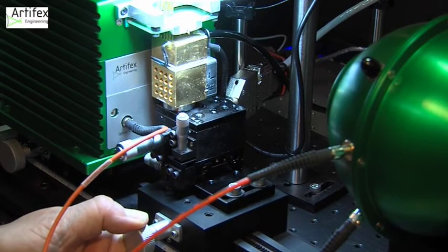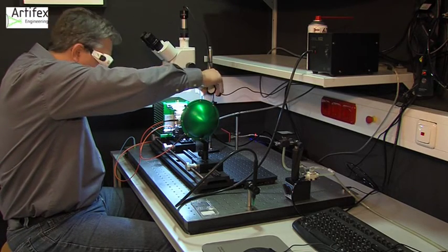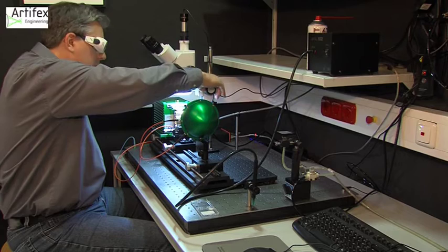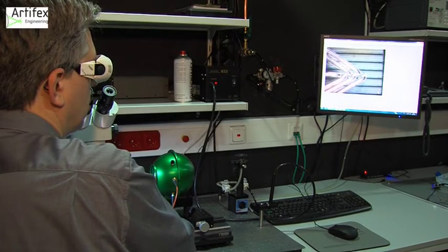A microscope is mounted above the chuck to monitor the manual adjustment of the needle contact. Several needles are used for current driving to spread the current flow. A separate needle is used for voltage measurement.